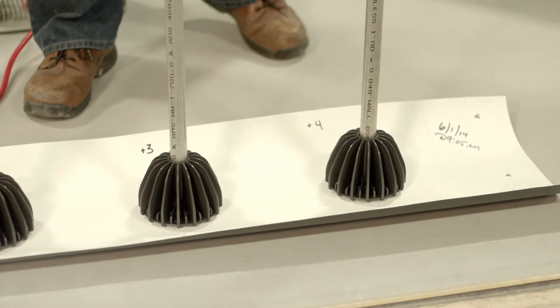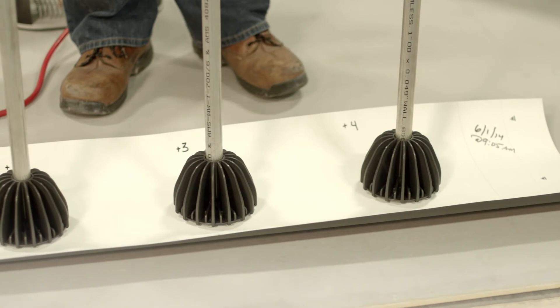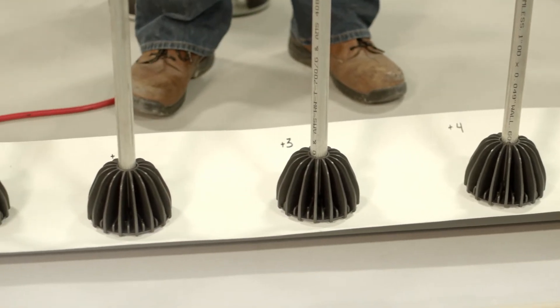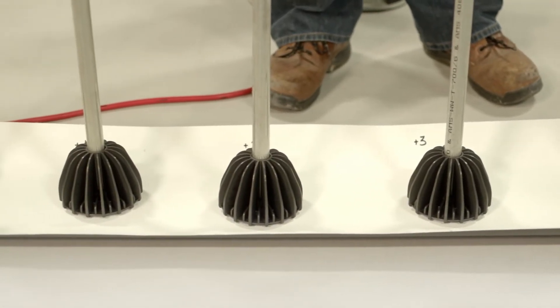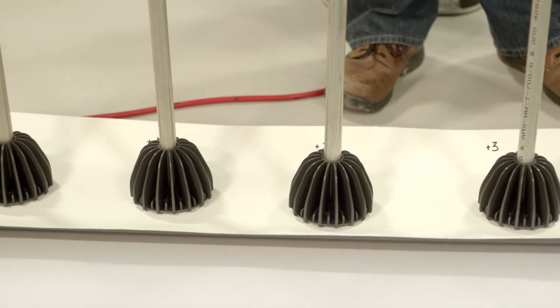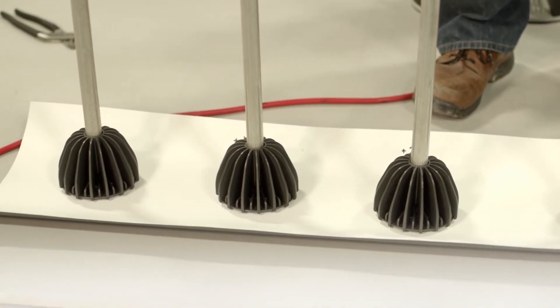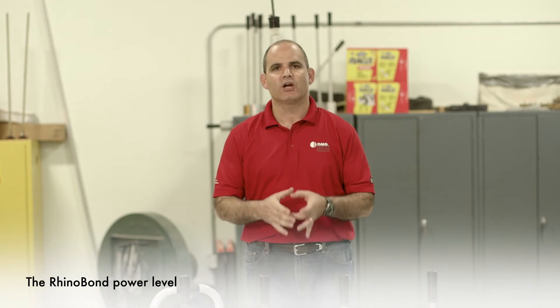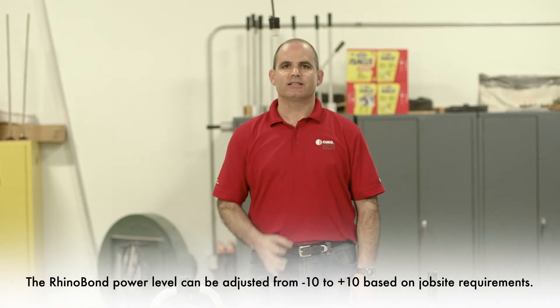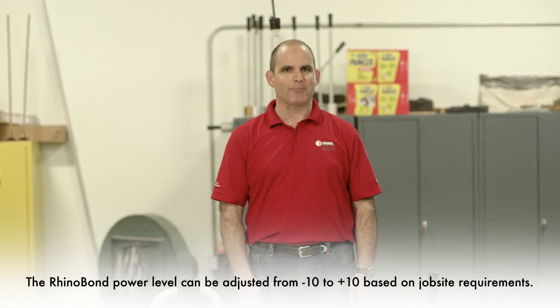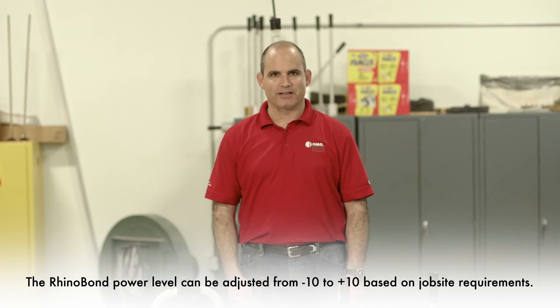So we've successfully completed five successive calibration welds, each at a different energy setting from a zero to a plus 4. We're going to allow each of these welds to cool to the touch before we pull them with our channel locks. Once we pull each one of these plates, we'll be doing a visual inspection to see which energy setting gave us an optimal bond. Let's get down to pulling the plates.